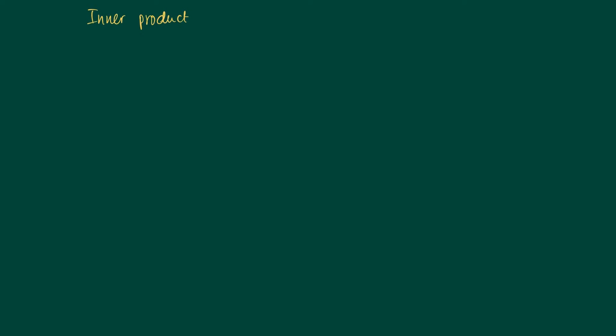Inner product. We have the following definition for two vectors in the same space, so two vectors with equal dimensions, with n coordinates. We define the inner product or the dot product of these two vectors.